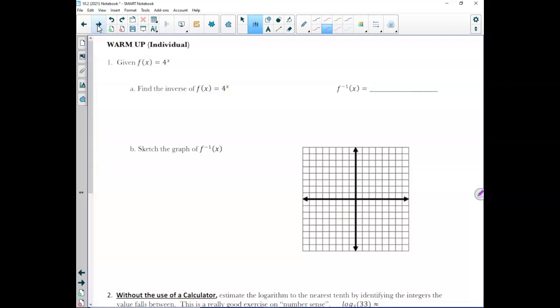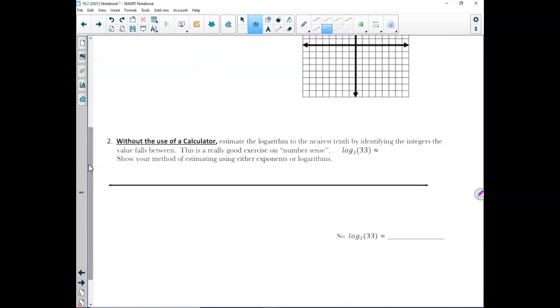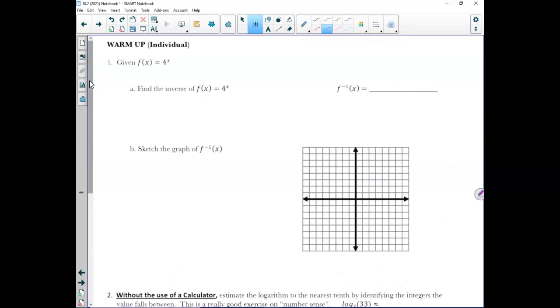All right, so what you have here is you have a little warm-up for you to go on. Number one, given f of x equals 4 to the x, what we want to do is we want to find the inverse of f(x) = 4^x. Then I want you to graph it. And then, without a calculator here at number two, I want you to estimate the logarithm to the nearest tenth by identifying the integers the value falls between. Why don't you hit pause, and why don't you do these problems up, and I will be right back.